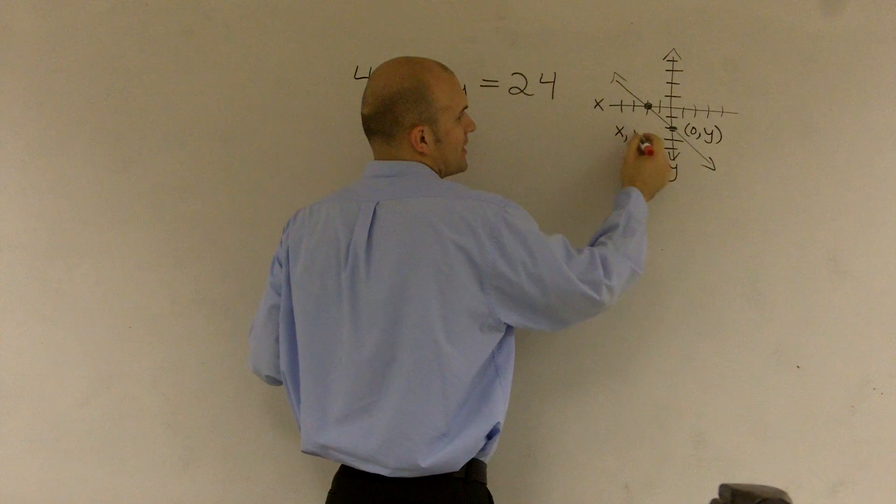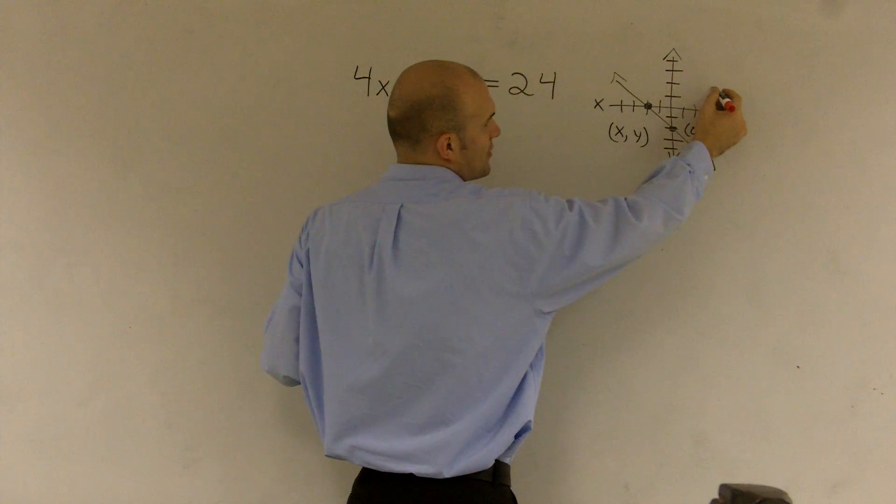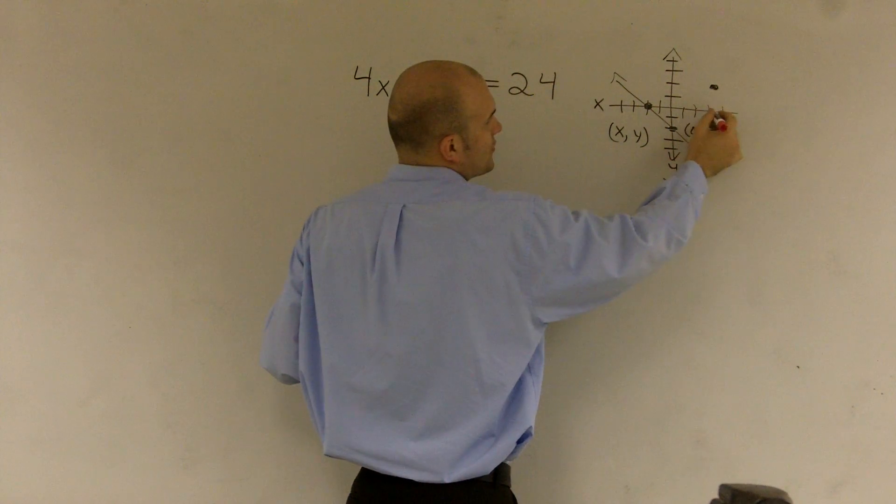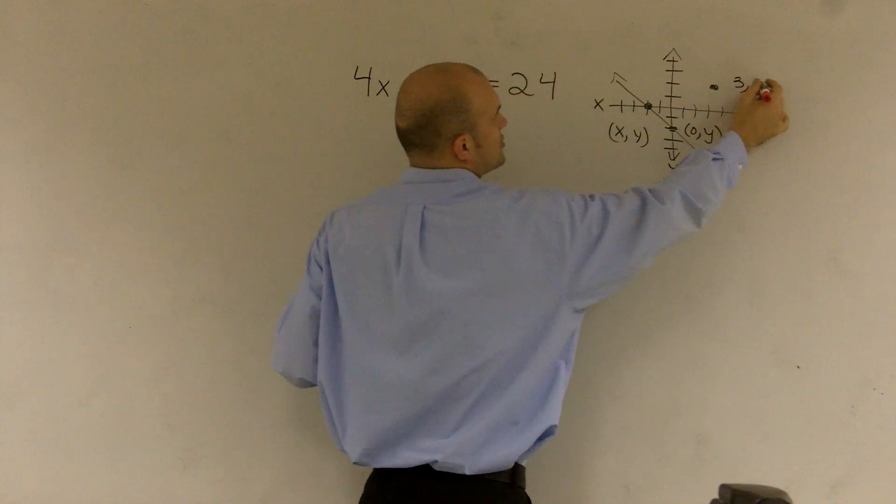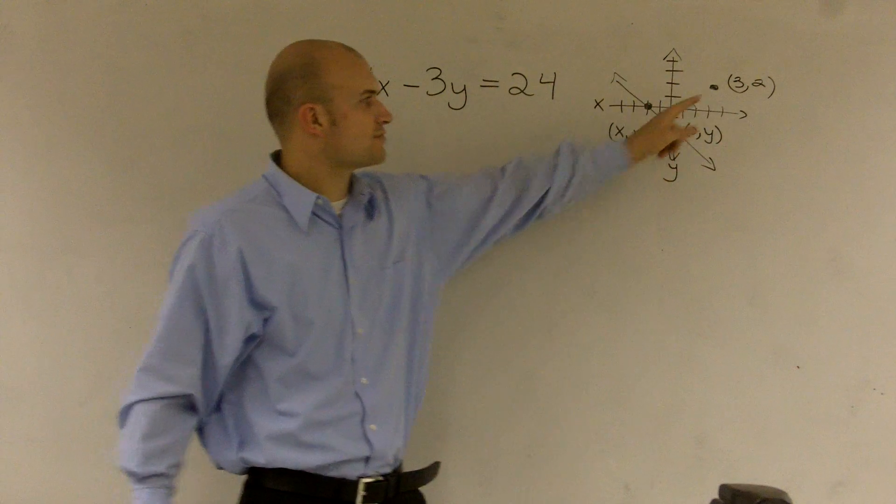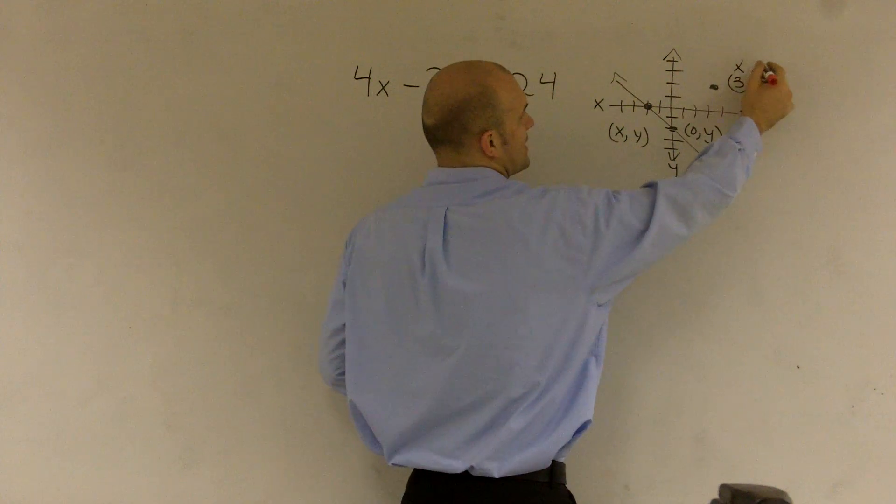Remember, every coordinate point has an x and a y-coordinate. For instance, this point here is 3, which moves over 3 units on the x and up 2 on the y. So this coordinate point is 3 comma 2.